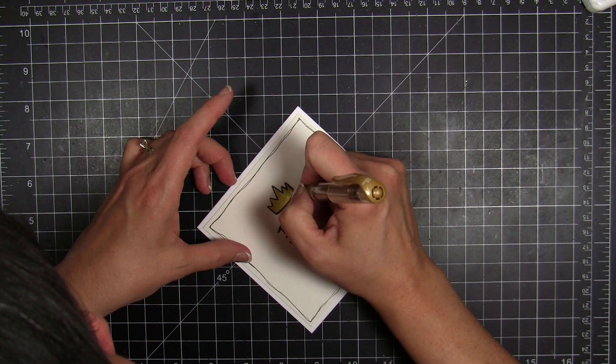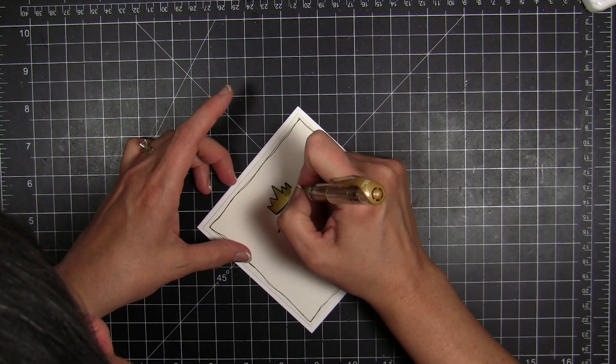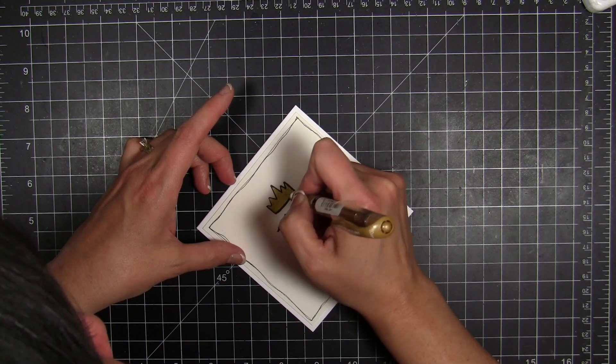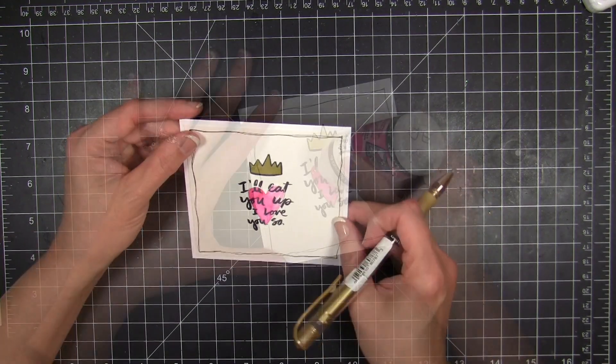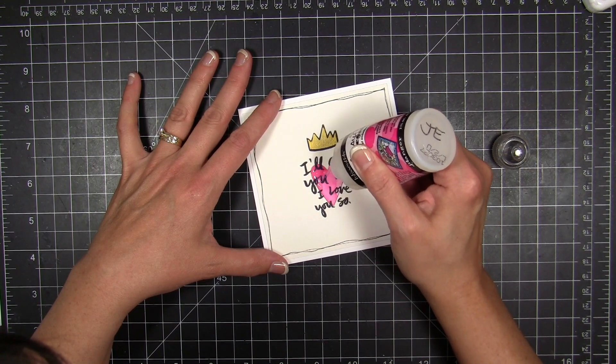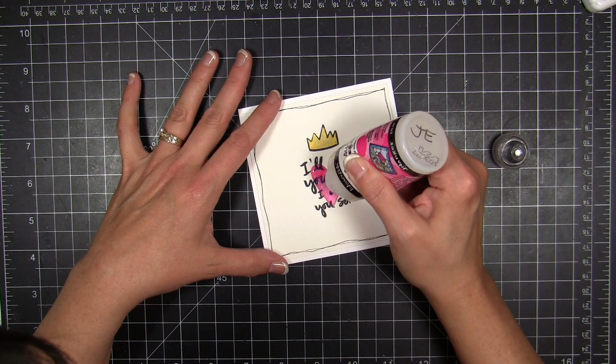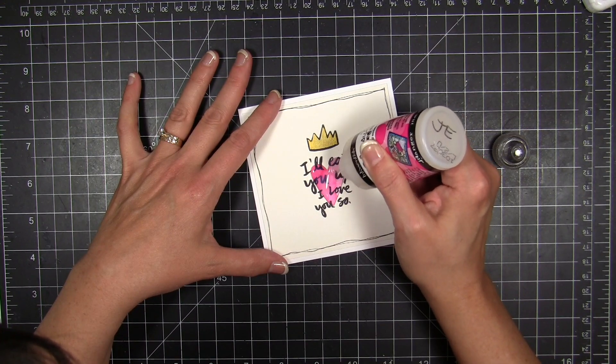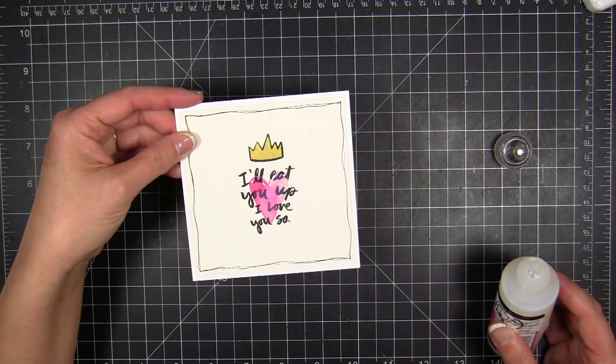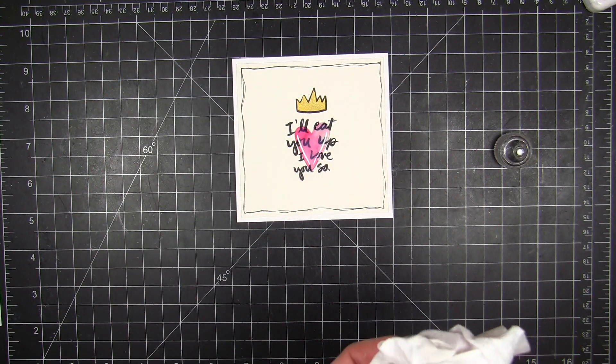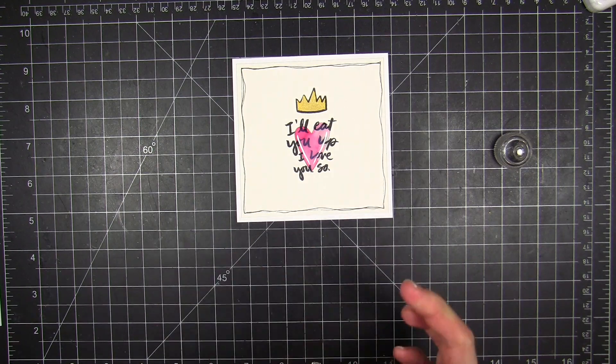I'm gonna highlight the crown with some Uniball Signo gel pen. This is a pretty gold color, and I know my granddaughter will like that. Then I'm gonna go over the top of the die-cut heart with some Glossy Accents. I'm gonna put a thick coating on there. It might be a little bit cloudy when it goes on, but it will dry perfectly clear and create a nice high-gloss shine there on that heart. I love the way it almost magnifies the bits of the words that are there on the heart.